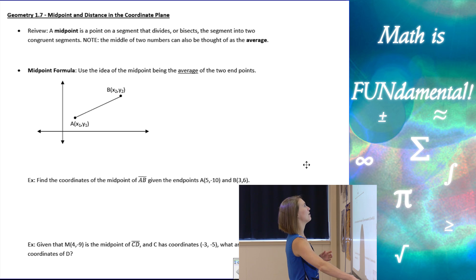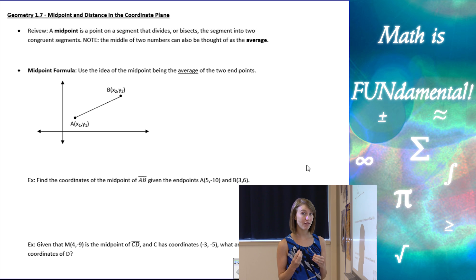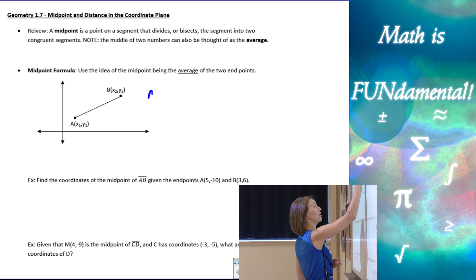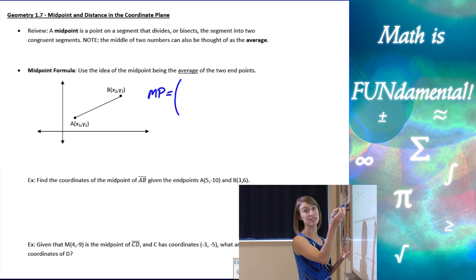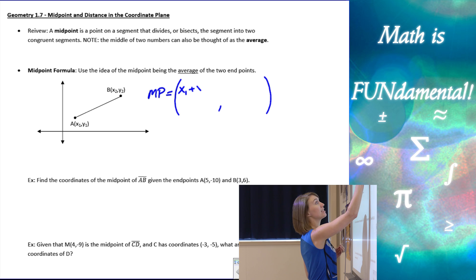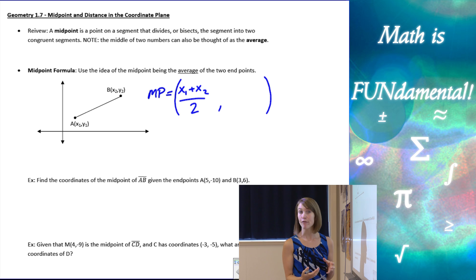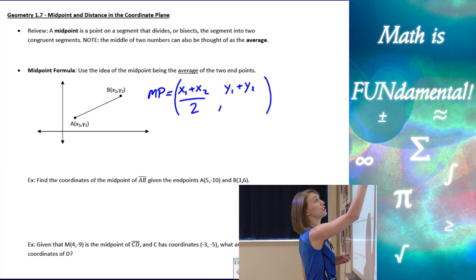Let's look at the midpoint formula. If point A is at (x₁, y₁) and point B is at (x₂, y₂), we find the average of those coordinates to get our midpoint. The midpoint MP is a coordinate point: the average of the x's is (x₁ + x₂)/2, and the average of the y's is (y₁ + y₂)/2.